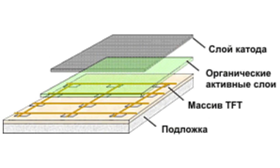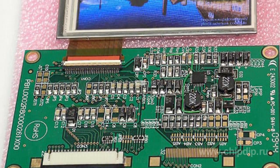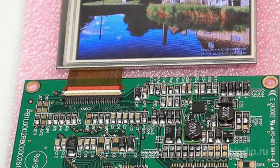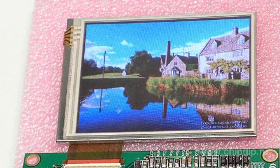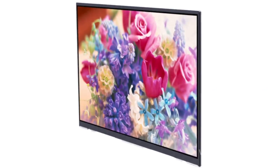So we use an active matrix. Each intersection of this matrix is connected with a control thin film transistor. A signal is sent to it, and the transistor executes the command and maintains the specified level of glow until it receives new commands. This helps to save electricity, for example.